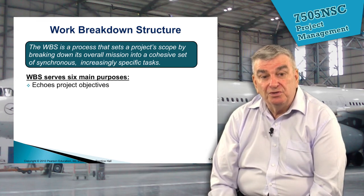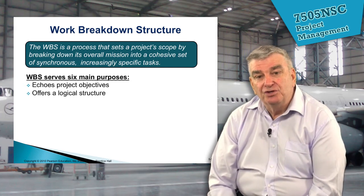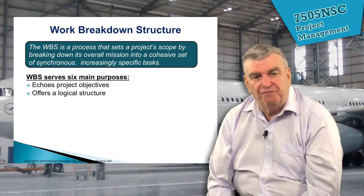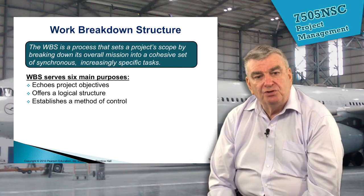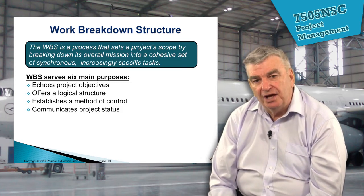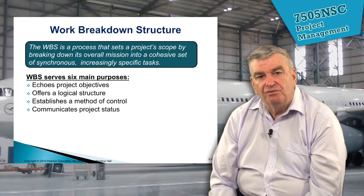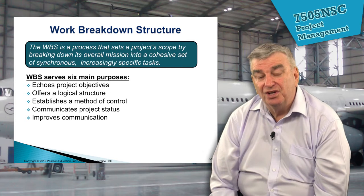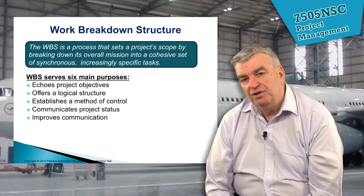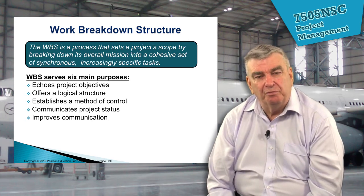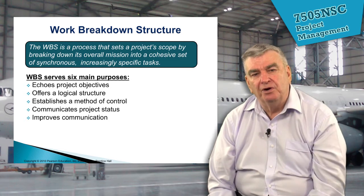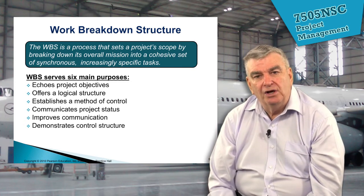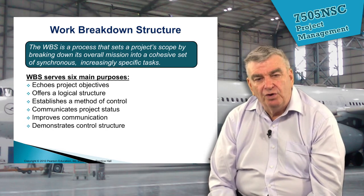The work breakdown structure has six purposes. It echoes the project's objectives. It offers a logical structure because it's a hierarchical process that goes from the broadest goal at the top down to the most specific work package at the bottom. It establishes a method of control. It communicates a project's status — as we achieve the different layers of the WBS, we're increasingly moving towards project completion. It improves communication because people can see not only their piece of work, but how it fits in with the other pieces on the project.